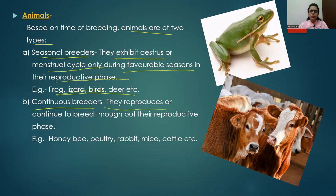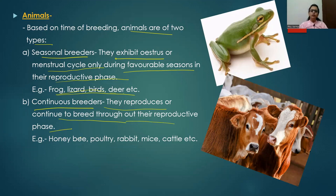Continuous breeders are those which reproduce throughout their reproductive phase — they have the ability to breed throughout their reproductive phase. Examples include honey bees, poultry, rabbits, mice, cattle, and human beings.